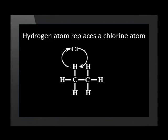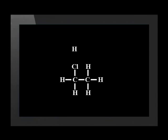In this diagram, we can see that a hydrogen atom is replaced by a chlorine atom. This is very useful because alkanes are not very reactive, but this haloalkane is more reactive and we can use it to produce many other chemicals.